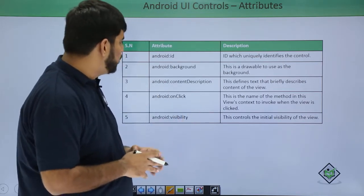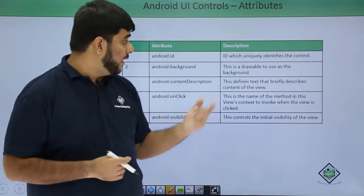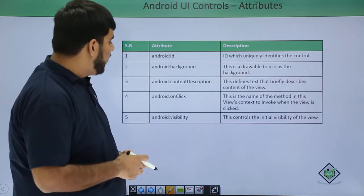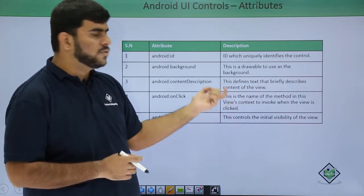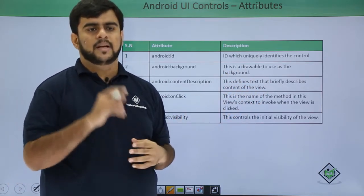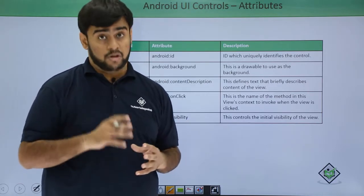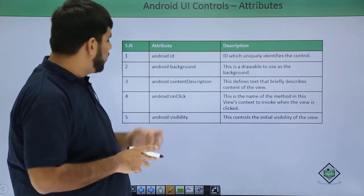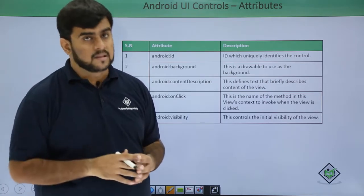After this, we have the content description. The content description describes or defines what is the content for that particular view. After this, we have the onClick. This is the name of the method — the view's context to invoke when the view is clicked. For example, for a button, if I want to perform some action on click of a button like I want to log in, I give the onClick functionality here to perform an action whenever the button is clicked.